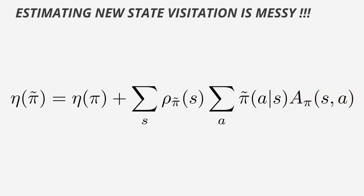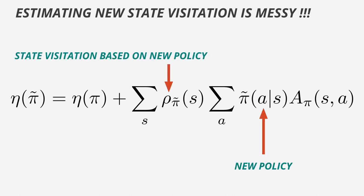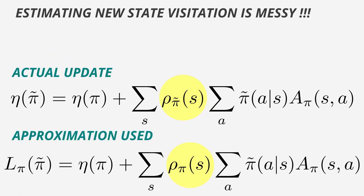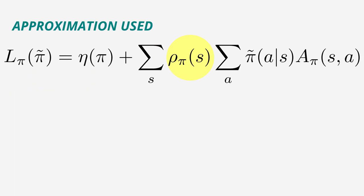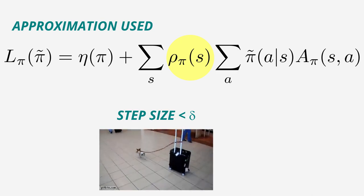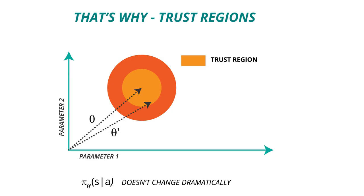Now there's a little problem here. If we estimate both the new state visitation and the new policy, it will complicate the problem. Instead, we may use the old visitation and only focus on improving the policy. Again, this approximation works for small steps — but how small is good enough?